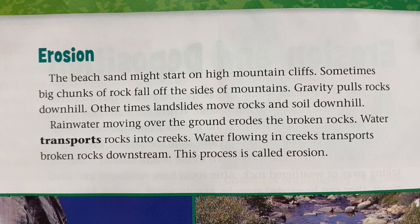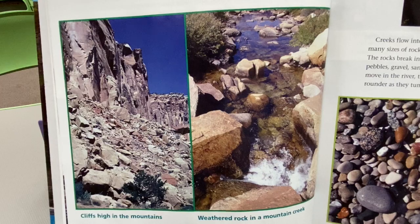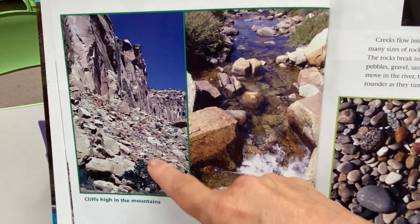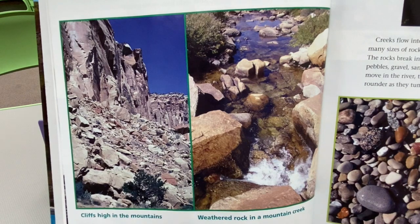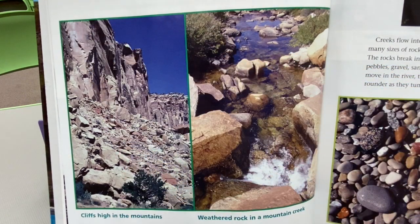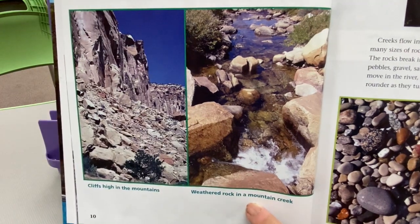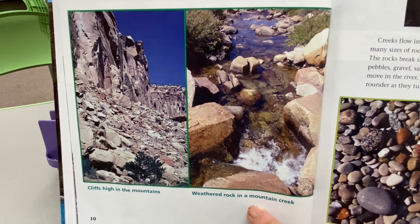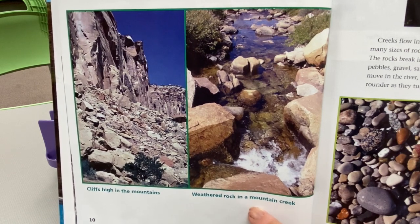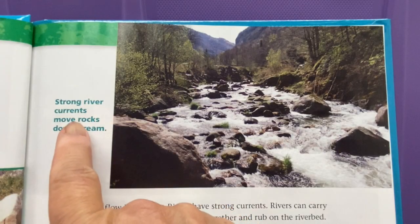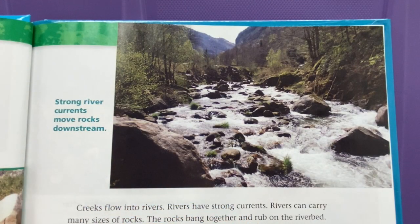This process is called erosion. Here is a picture of cliffs high in the mountains where rocks sometimes start off and fall from the top down to the bottom. Here is a picture of weathered rocks in mountain creeks. Sometimes the rocks fall into the creeks, and strong river currents move rocks downstream.